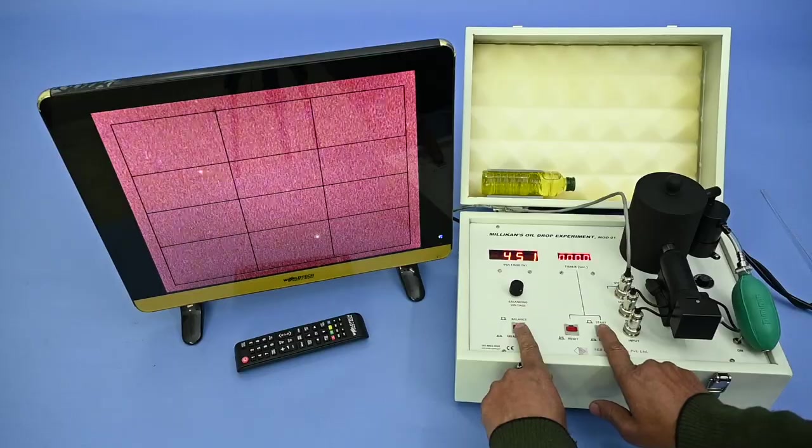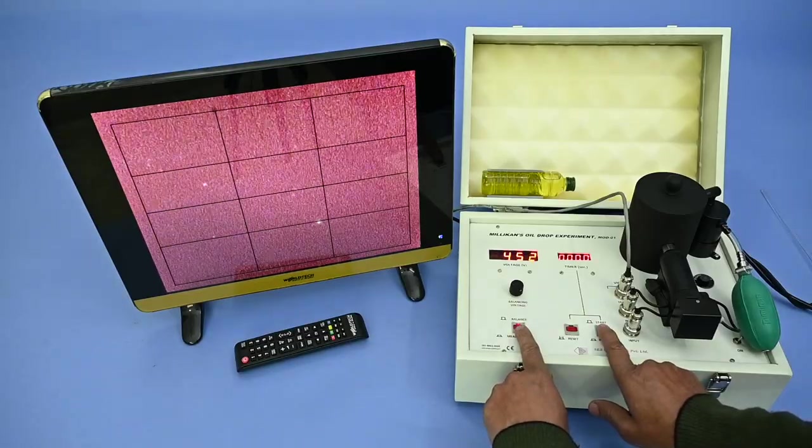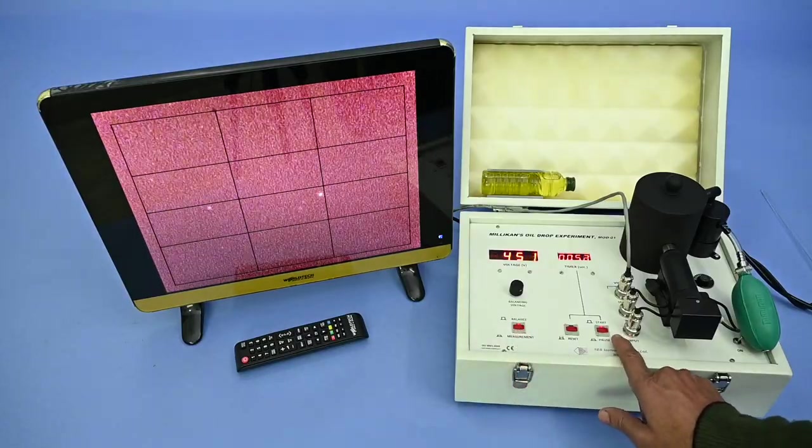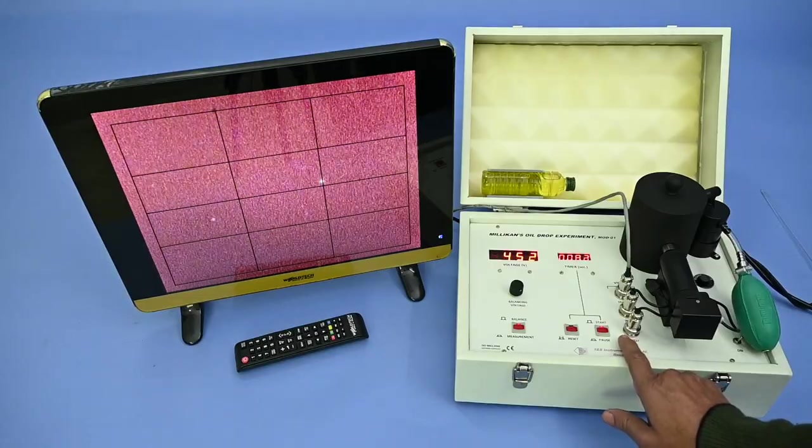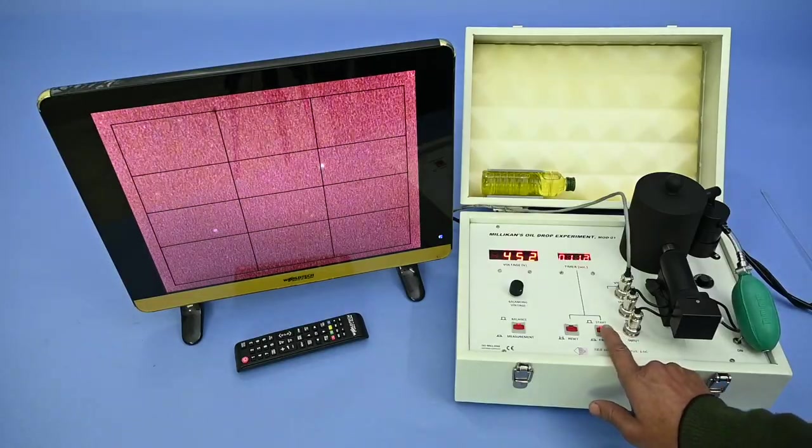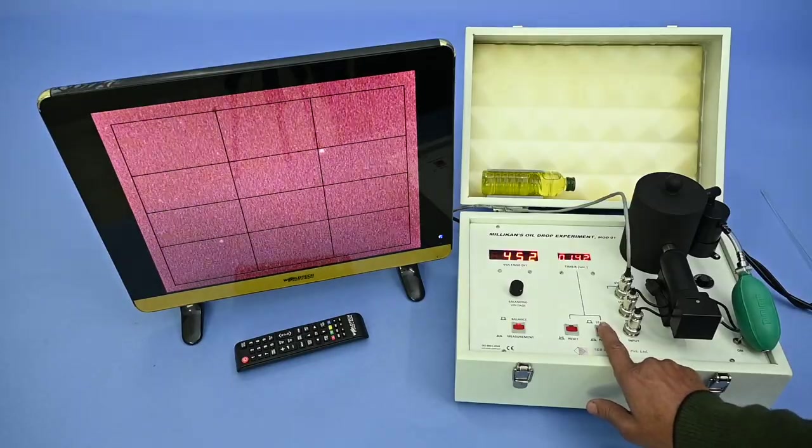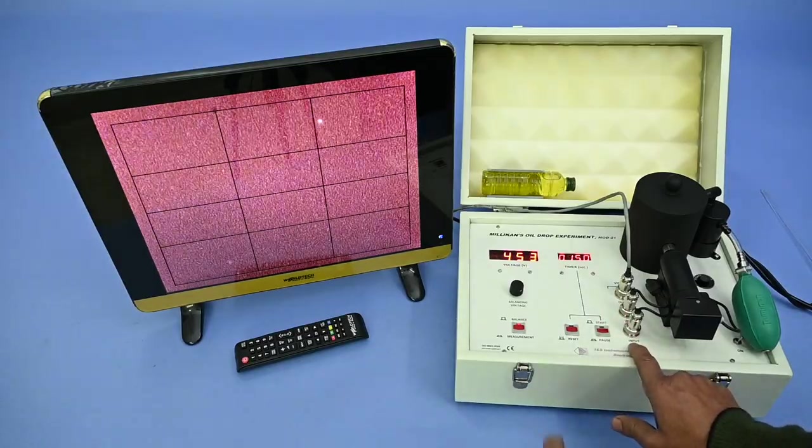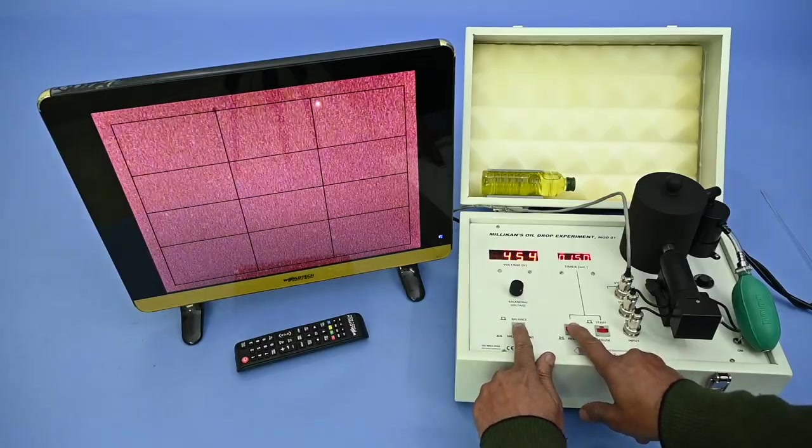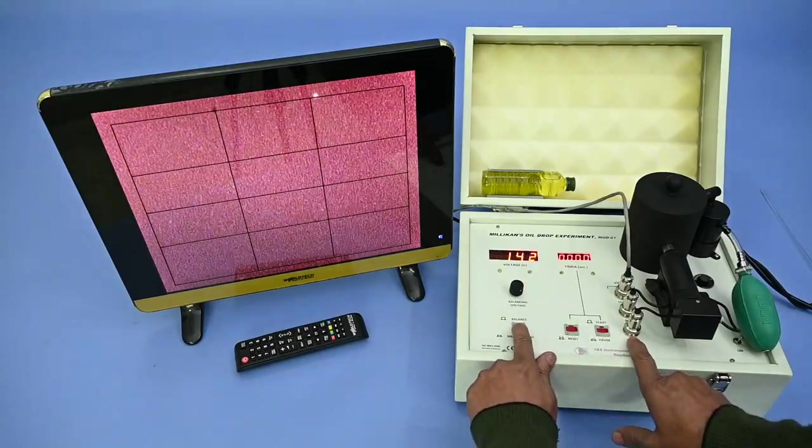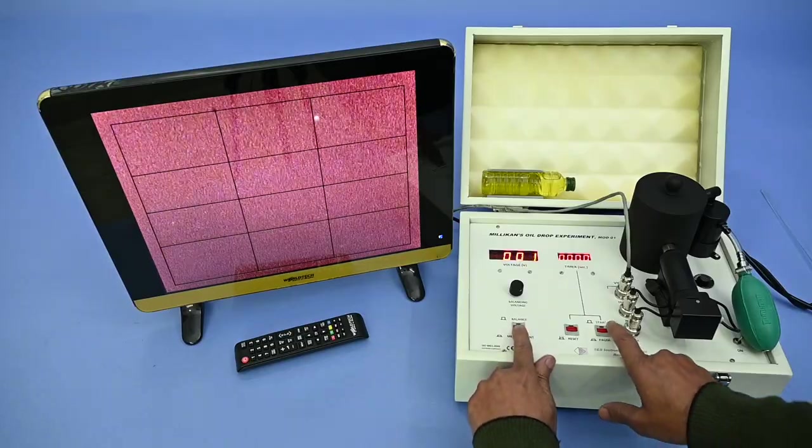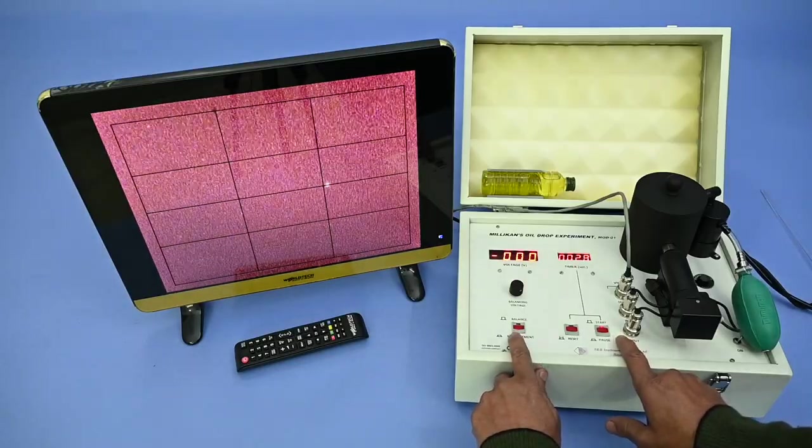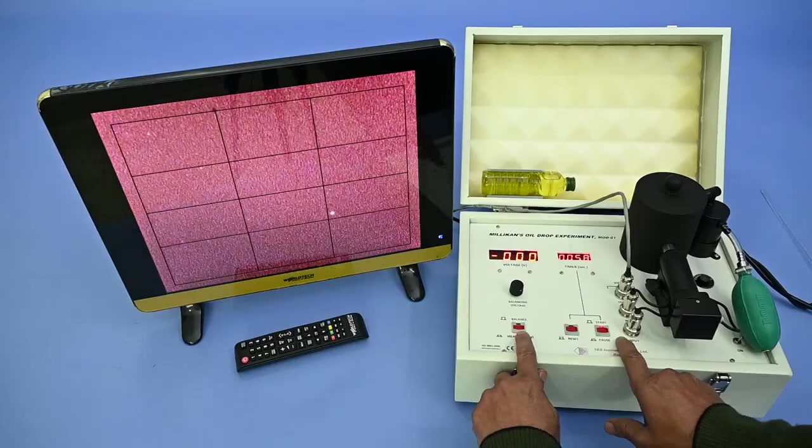Now, apply the balance voltage and when it comes near to the second line, start the timer. And when it just reached to the fourth line, pause. So that is the rise time. Now it is pause. So 150 second is the rise time. So this is the way you can measure the fall time and rise time of droplet.